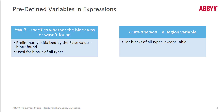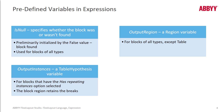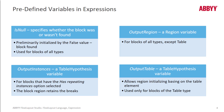There's also the output region variable for blocks of all types except the table block. With script, that identifies the region that's mapped to the block. If we've got a repeating group — any kind of repeating data for blocks that have the 'has repeating instances' option selected — you can refer to the variable output instances. And finally, the output table variable is something we can use for mapping blocks of the table type.